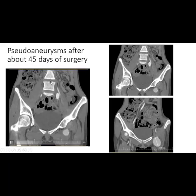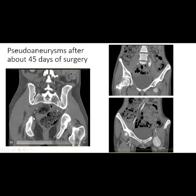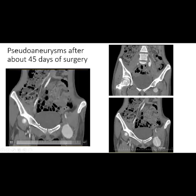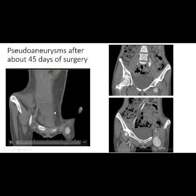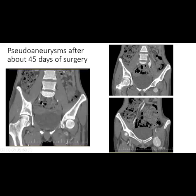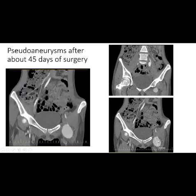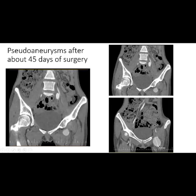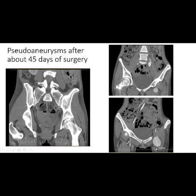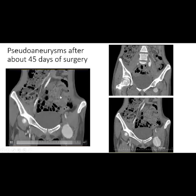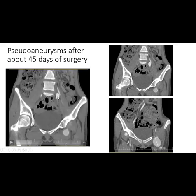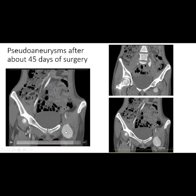After about 45 days of surgery, CT angiography showed formation of mycotic aneurysms in these arteries. You can see that the occlusion of the internal iliac artery has changed to a mycotic aneurysm, and the occlusion at the groin has changed to a large mycotic aneurysm of about 5 cm. You can see the mycotic aneurysms — that's the internal iliac artery aneurysm, and this is the large mycotic aneurysm at the groin of the patient.